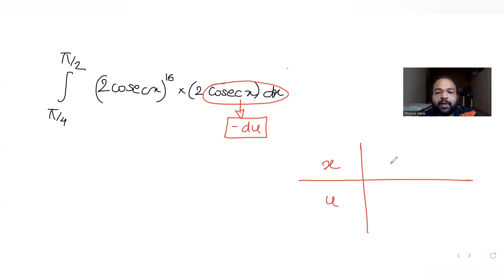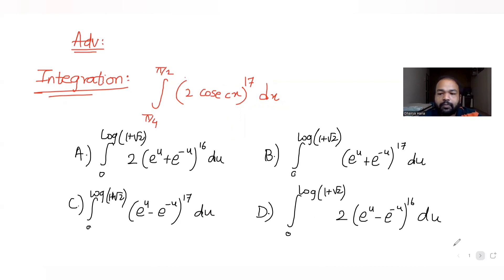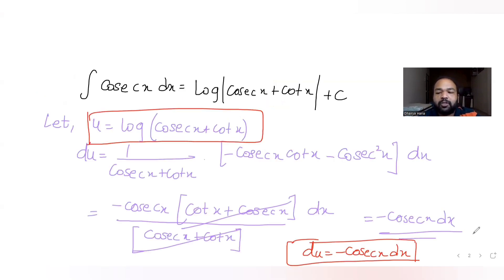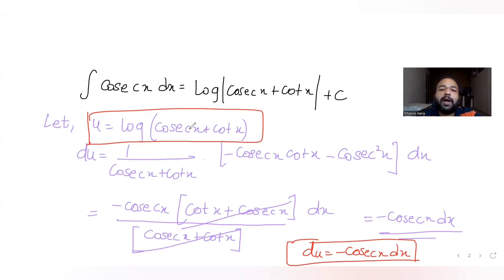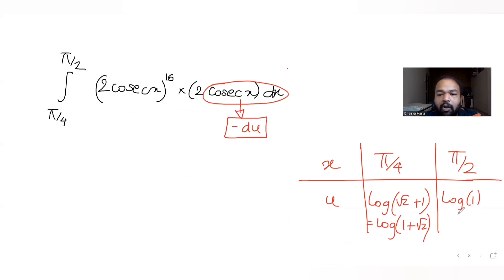Now let's work out how the limits change. With the substitution u = log(cosec x + cot x): when x = π/4, cosec(π/4) = √2 and cot(π/4) = 1, so u = log(√2 + 1) = log(1 + √2). When x = π/2, cosec(π/2) = 1 and cot(π/2) = 0, so u = log(1 + 0) = log 1 = 0. So the limits transform from [π/4, π/2] to [log(1 + √2), 0].